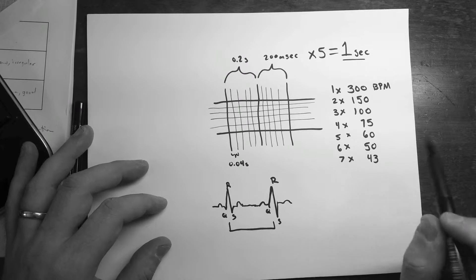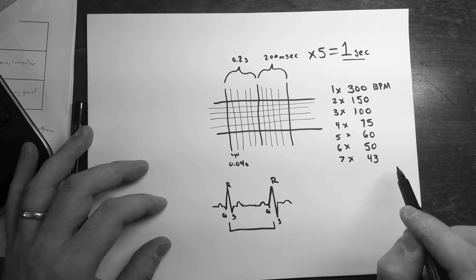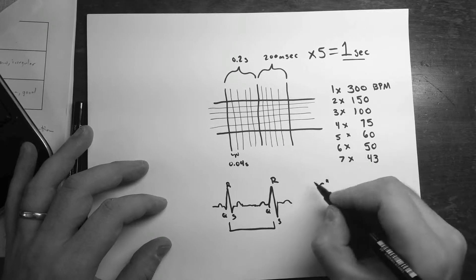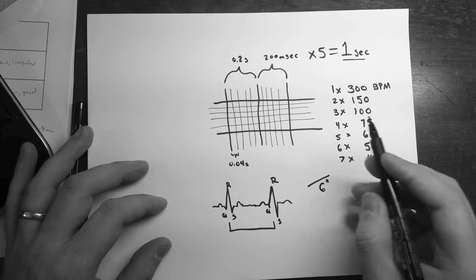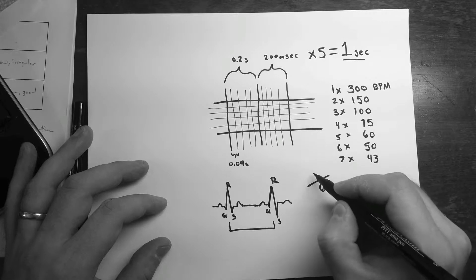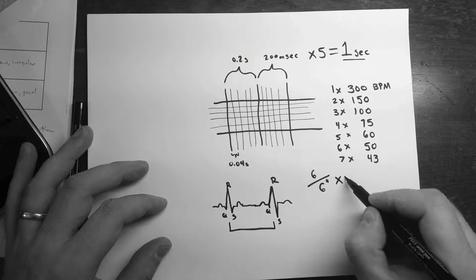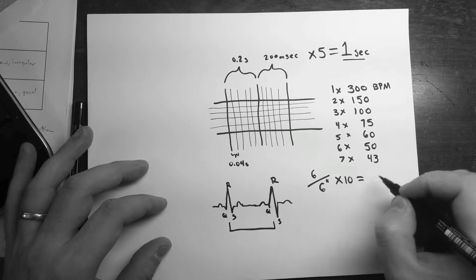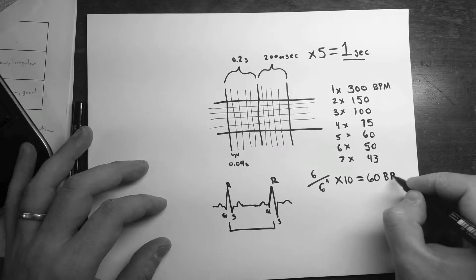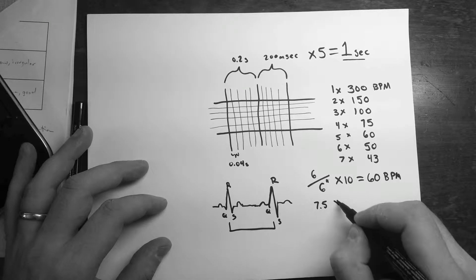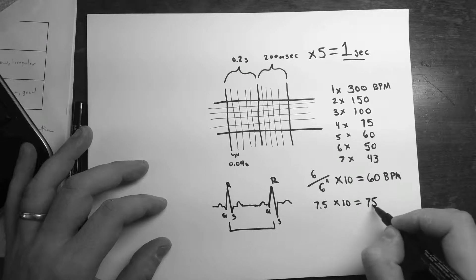Now by the time we get down to 43, this gets a little less accurate. Another trick you can do is you can take six seconds of time and count up how many beats you have in that six seconds. So let's say we have six beats in those six seconds, and then multiply that by ten. So you're not really dividing. This is just six per six seconds. You do six times ten. If you have six beats in six seconds, that's 60 BPM. If you have 7.5, if you want to get fancy, in six seconds, that's 75 beats per minute.